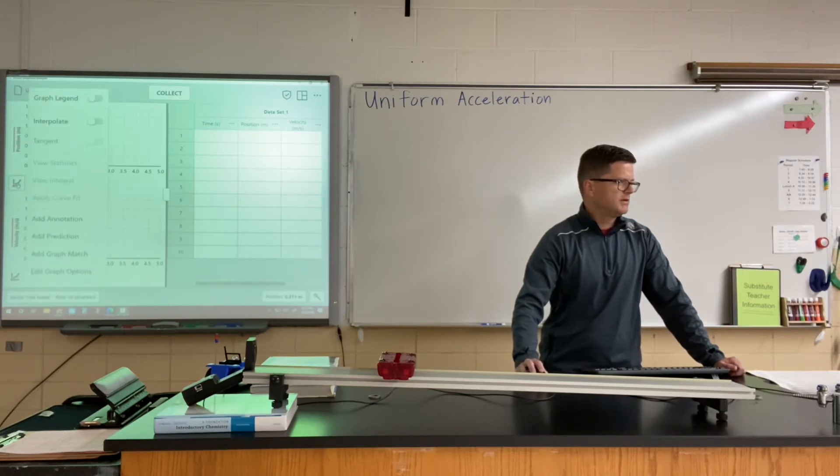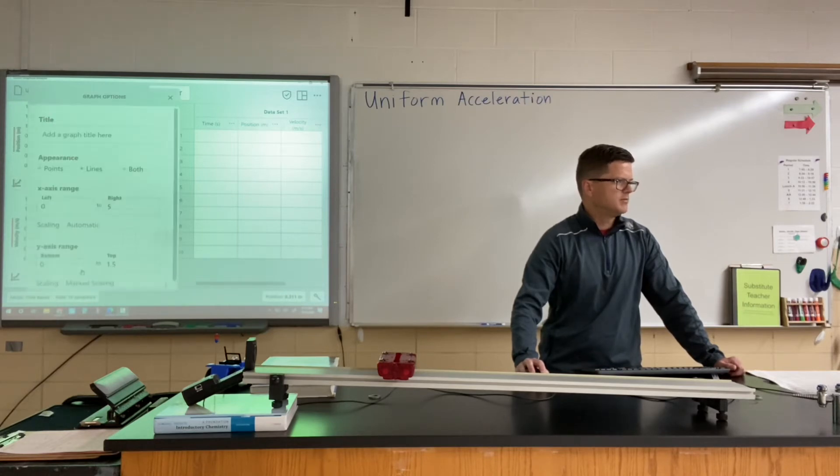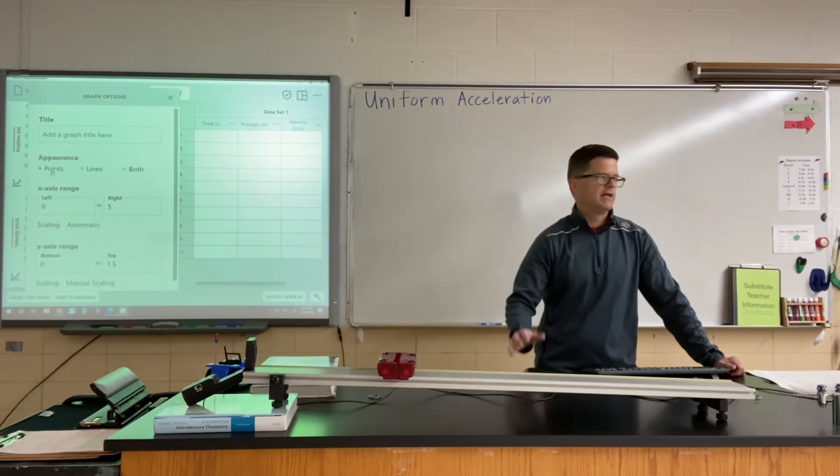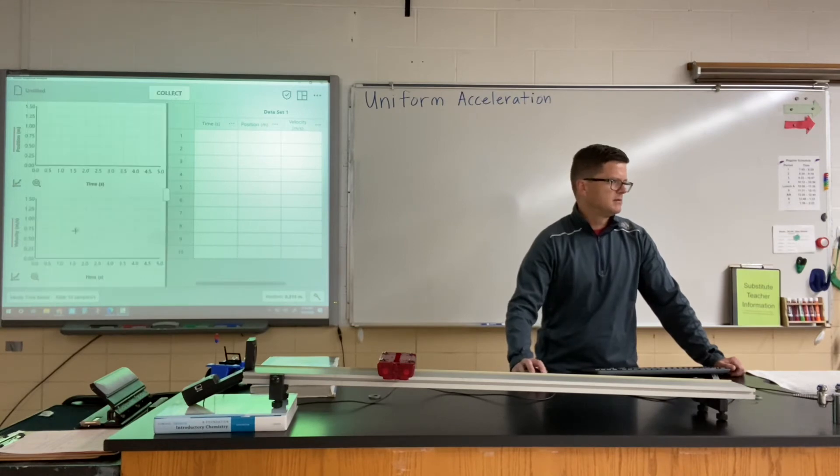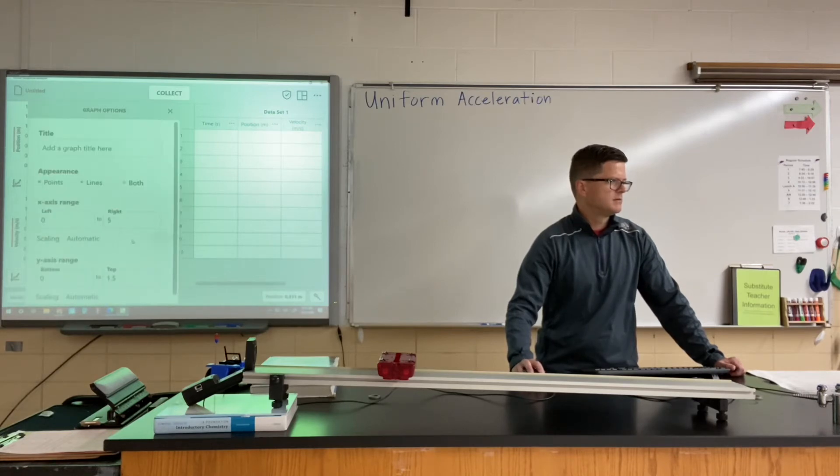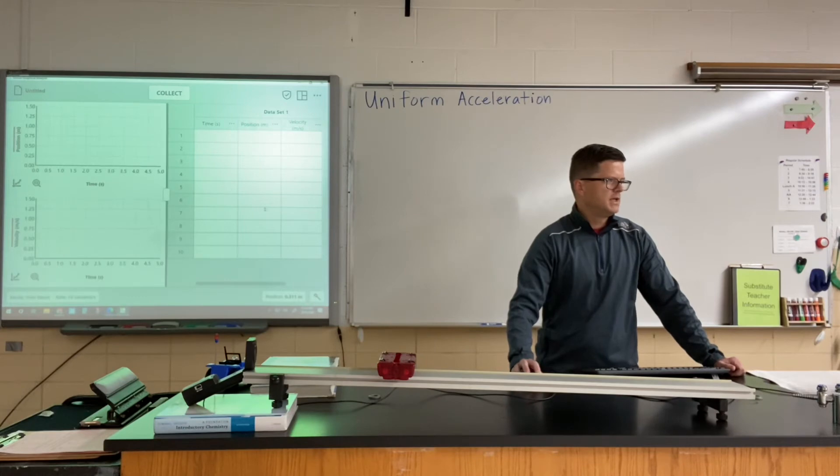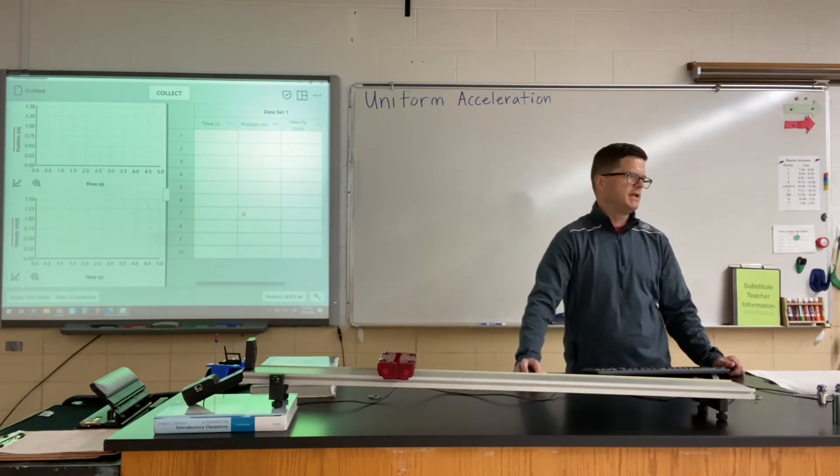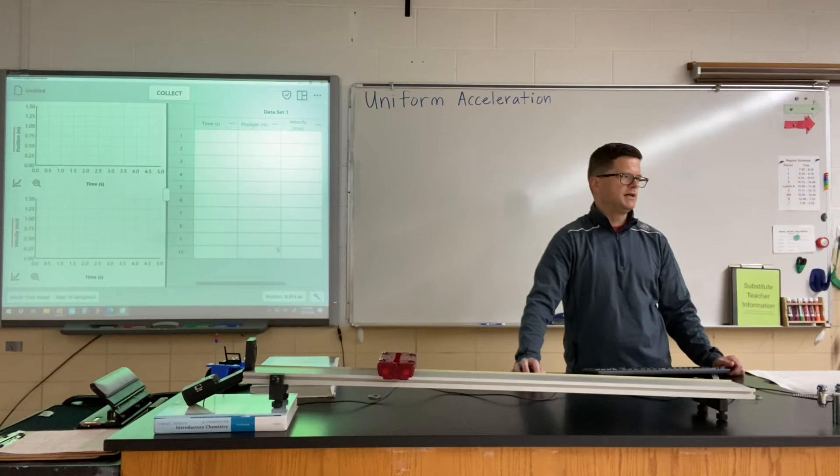Another thing that I want to check real quick is under graph options, I'd like to see these as data points rather than lines because we're going to be analyzing them as individual data points. Let me set that up for both graphs. Over here under dataset one we're going to get time data, position data, and then the software can also calculate the corresponding velocity values at each time.